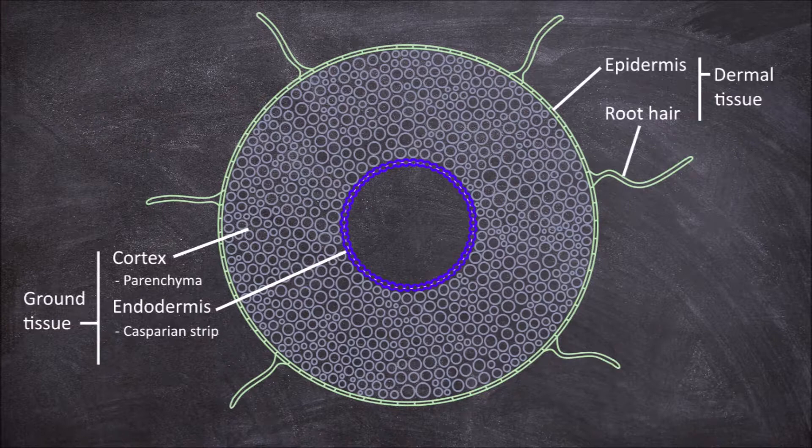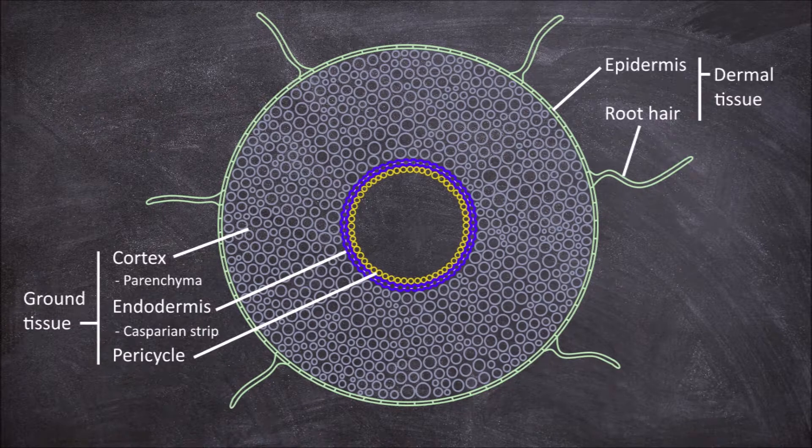The next layer in is the pericycle, which is the internal meristem—the part of the root involved in the growth of lateral roots.